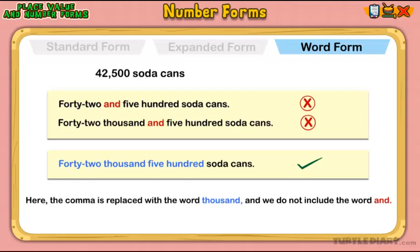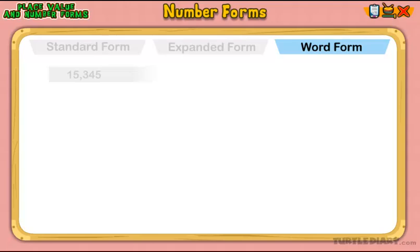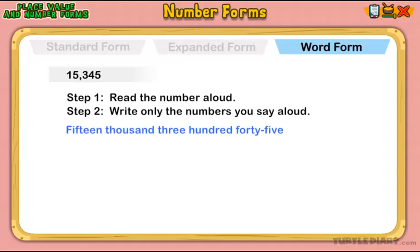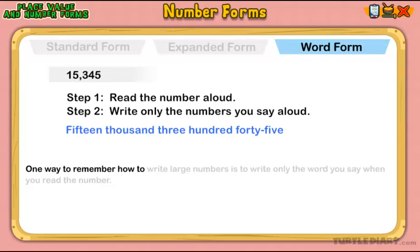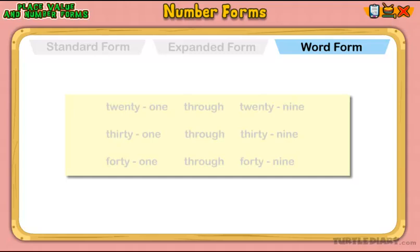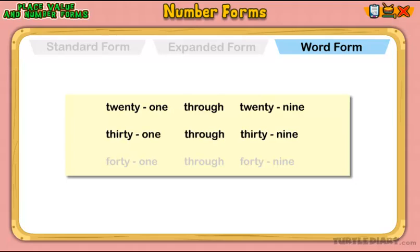Let's look at one more example of writing large numbers. Here is the number fifteen-thousand-three-hundred-forty-five. Notice that the number forty-five has a hyphen between it. One way to remember how to write large numbers is to write only the word you say when you read the number. Similarly, numbers twenty-one through twenty-nine, thirty-one through thirty-nine, forty-one through forty-nine, and so on, have a hyphen between each number word.